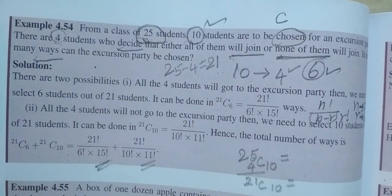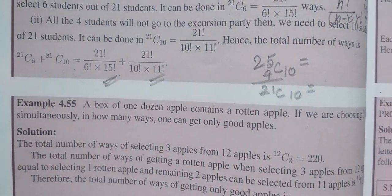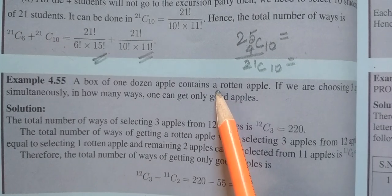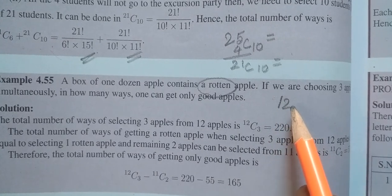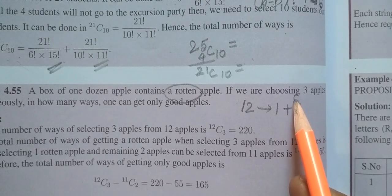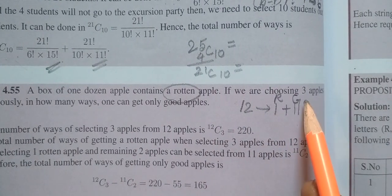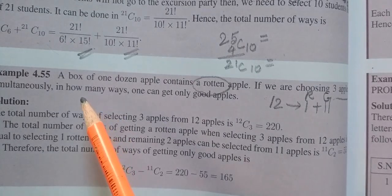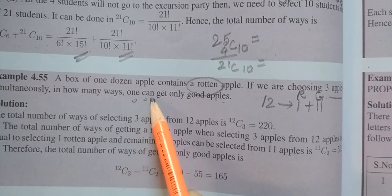For example 4.55, a box of 1 dozen apples contains 4 rotten apples. The answer is 1. A rotten apple means 1. There are 12 apples. 1 apple is rotten. Good apple is 11. So, 11 apple is good, 1 apple is rotten. Then, if you are choosing 3 apples, we have 3 apples. Simultaneously, at the time, how many ways? One can get only good apples.